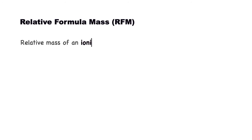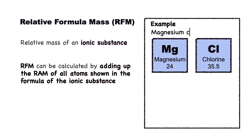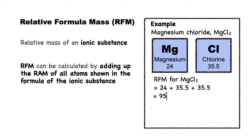Next, we move on to relative formula mass, R-F-M. It is the relative mass for ionic compounds. It can be calculated by adding up the R-A-M of all atoms shown in the formula. For example, for magnesium chloride, MgCl2: to calculate the R-F-M, 24 plus 35.5 plus 35.5, which equals 95.